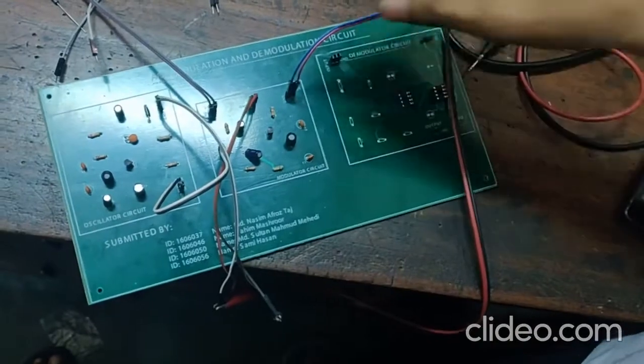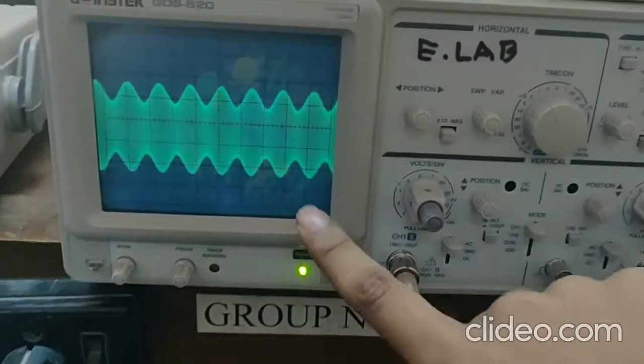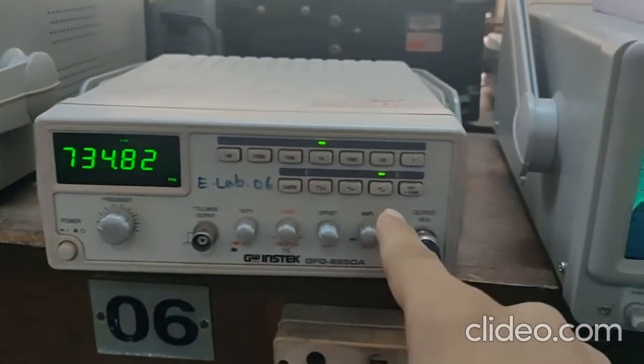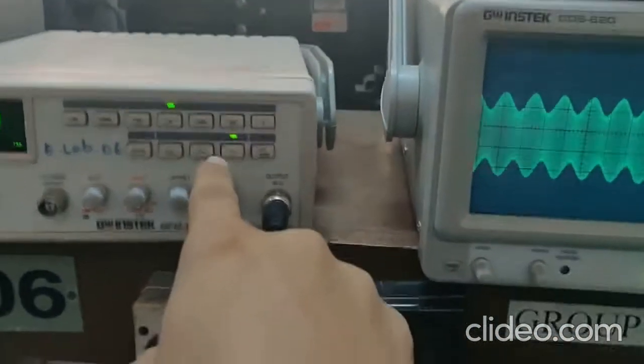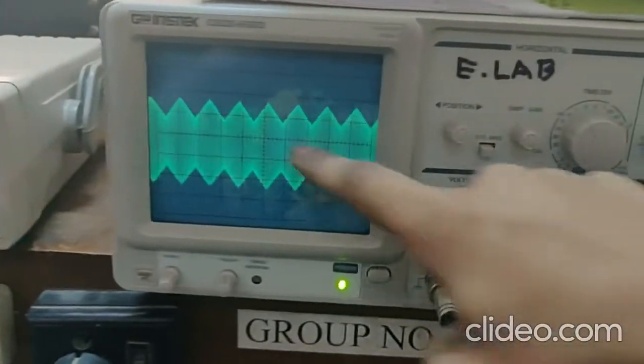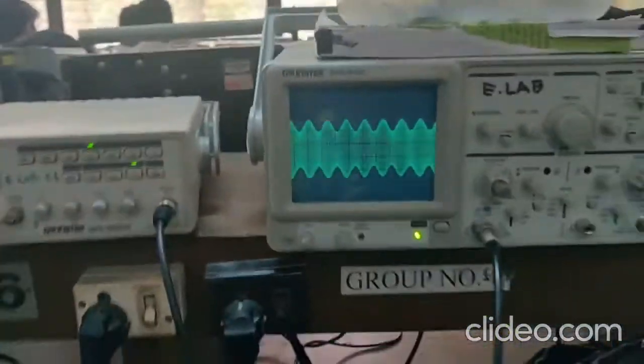So this is our modulator. We have taken the output of the modulator and as we see it in the oscilloscope, we see our modulated signal where you can see the envelope of the message signal. If the message signal is triangular, then we see that the envelope is correctly triangular. If it's square, then it also becomes square. And for sine, it is a sine envelope.